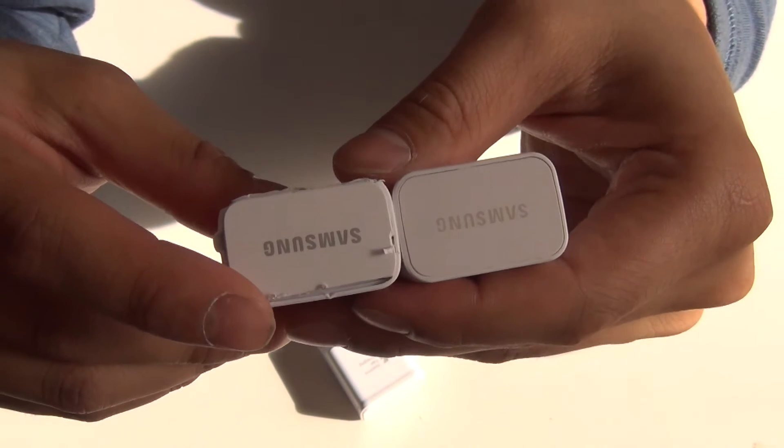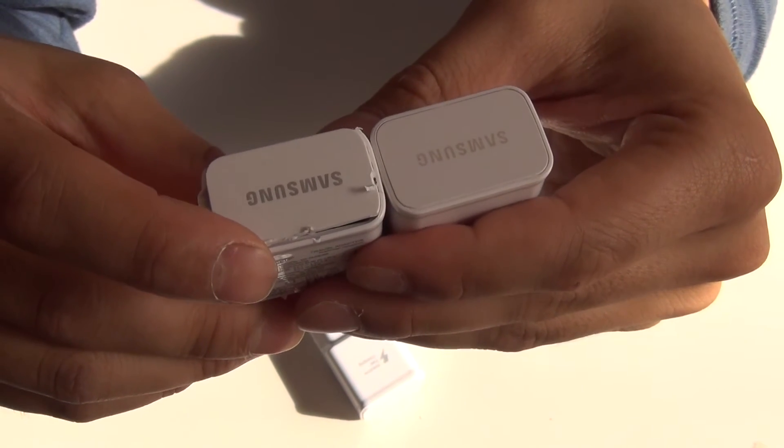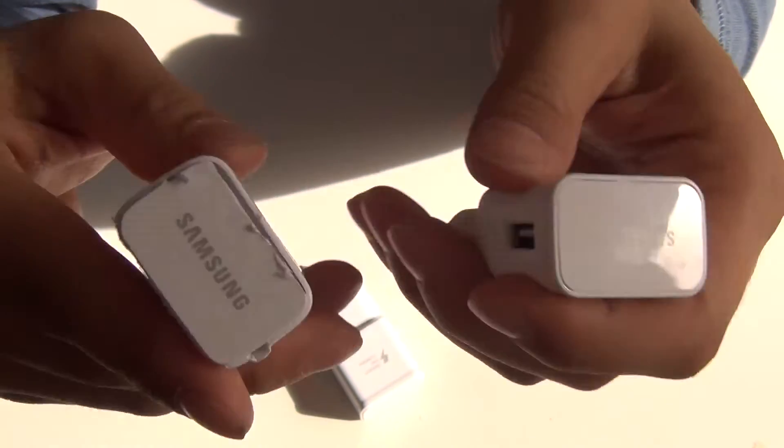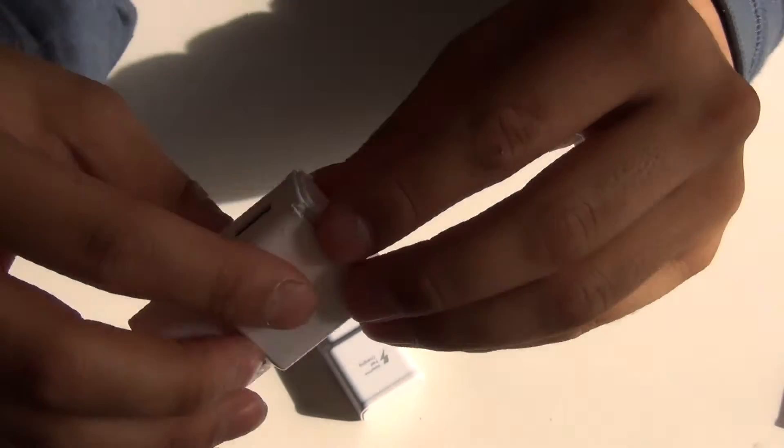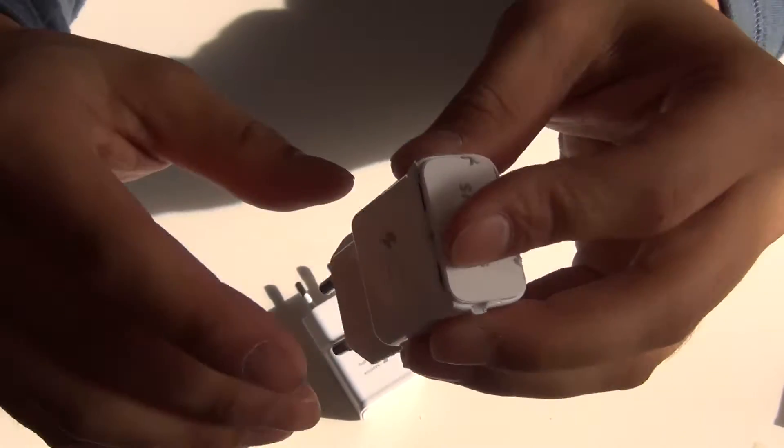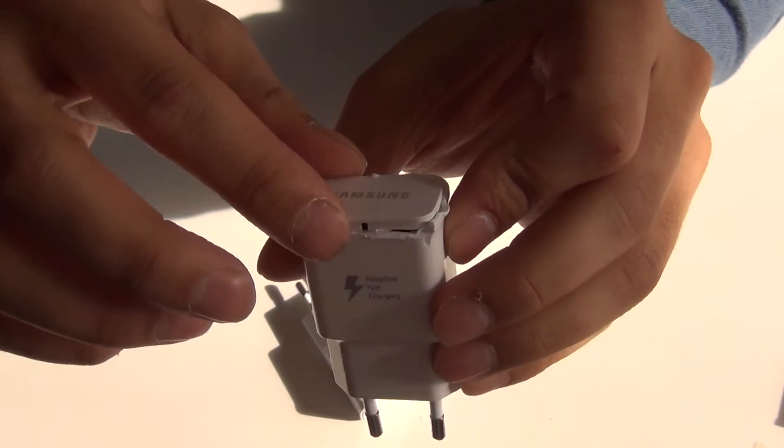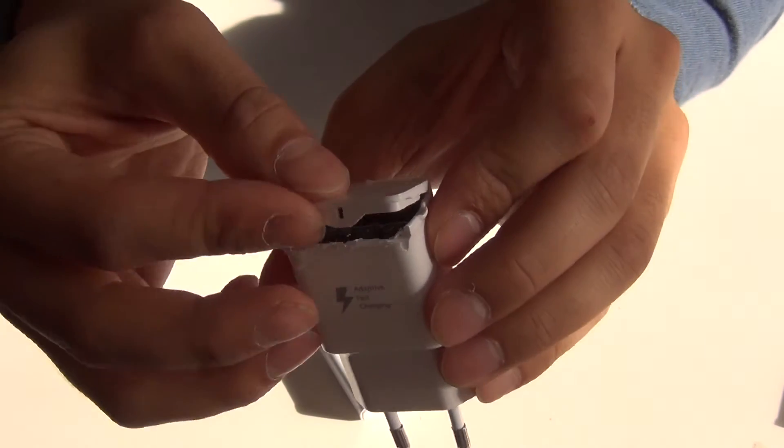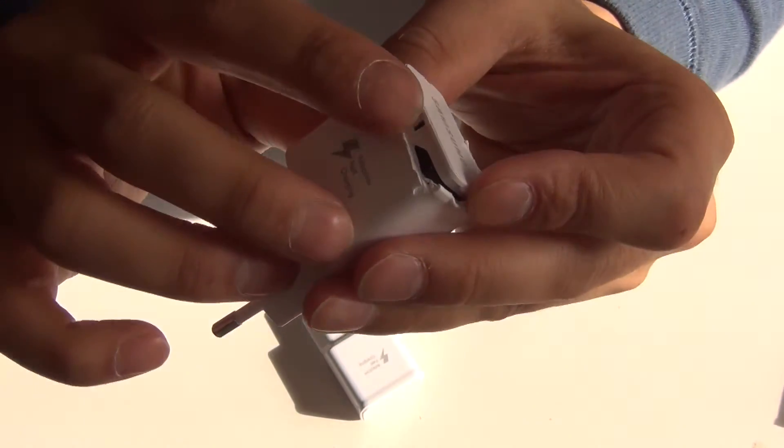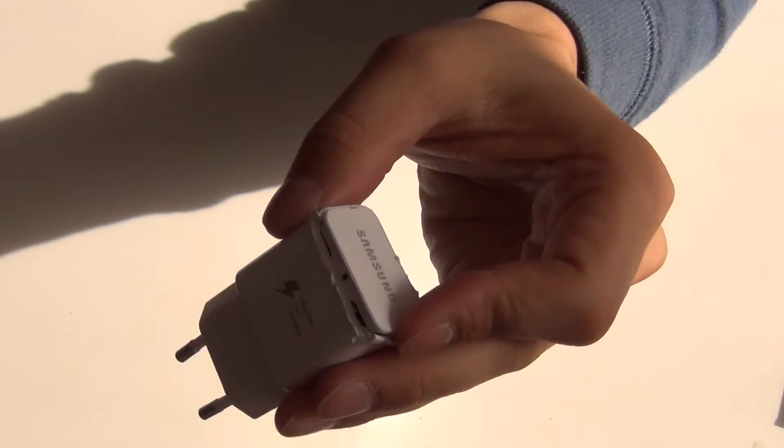So let's see how the electronics inside are. First of all, it was very difficult to remove the top cover from Samsung using just a screwdriver. It was not possible, so I used this tool to make a small hole inside.